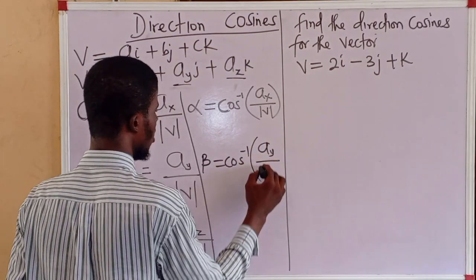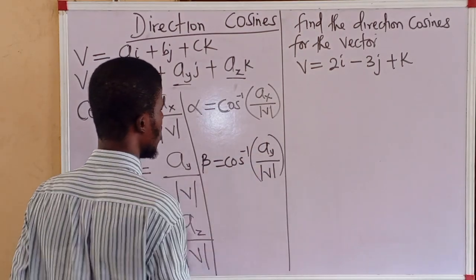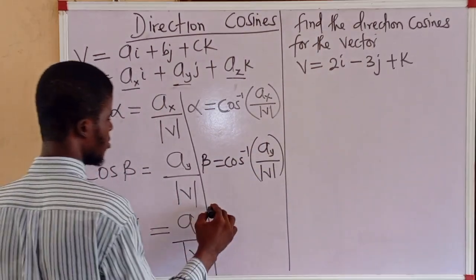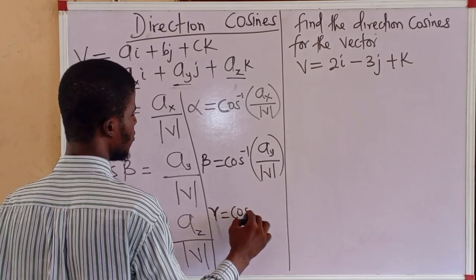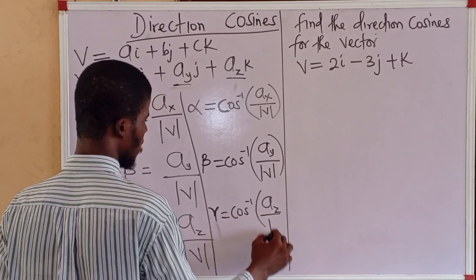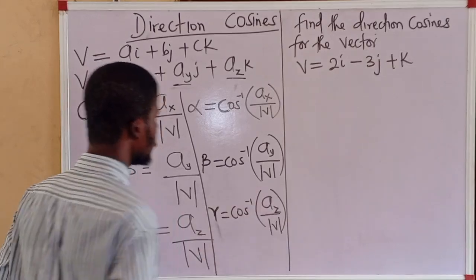ay all over absolute value of v. And gamma is the cos inverse of az all over the absolute value of v. So, these are direction cosines and these are their respective direction angles.